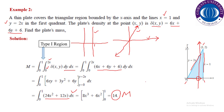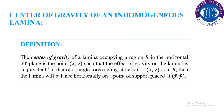Now let us move toward the next topic: center of gravity of an inhomogeneous lamina. The center of gravity of a lamina occupying a region R in the horizontal x-y plane is the point (x̄, ȳ). The center of gravity is basically a special point such that the effect of gravity on the lamina is equivalent to that of a single force acting at (x̄, ȳ). If (x̄, ȳ) is in R, then the lamina will balance horizontally on a point of support placed at (x̄, ȳ).